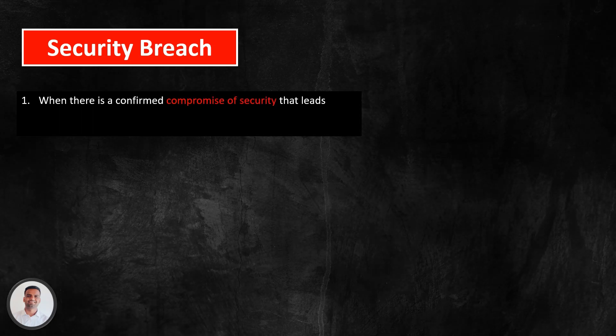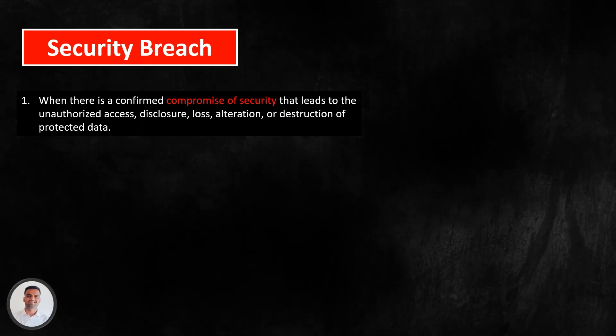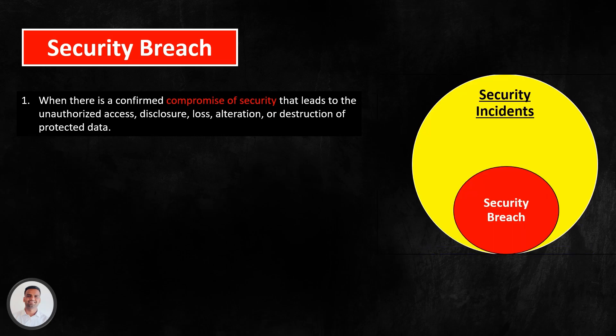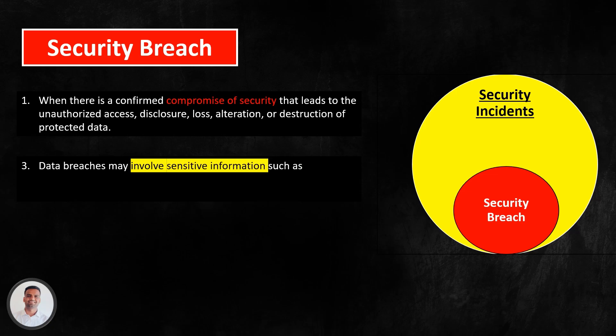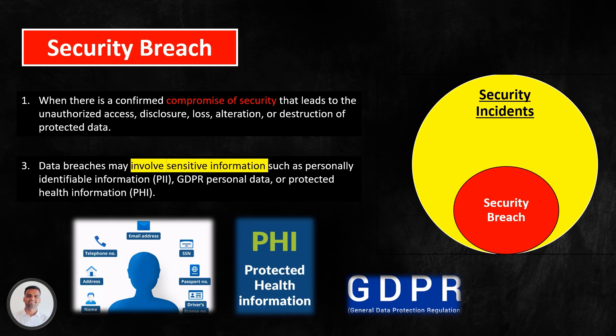Coming to security breach: a security breach or data breach occurs when there is a confirmed compromise of security that leads to the unauthorised access, disclosure, loss, alteration or destruction of protected data. It is a subset of security incidents that meet specific legal definitions under state, federal or provincial breach laws. Data breaches may involve sensitive information such as personally identifiable information (PII), GDPR personal data, or protected health information (PHI). An example of a security breach is a hacker gaining unauthorised access to a database containing customer credit card information.